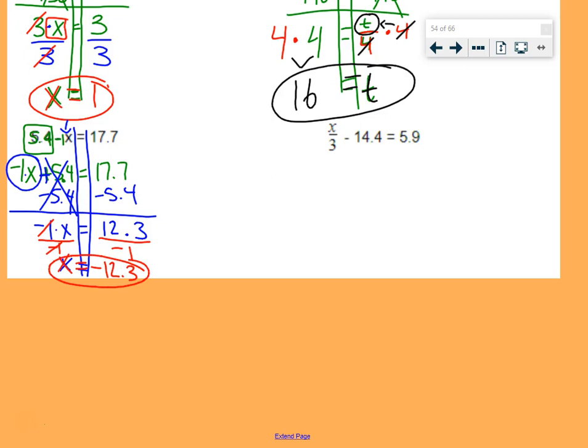All right, last example. Here's your railroad tracks. Here's your variable. That's your goal, get x by itself. I want you right now to try on your own getting x by itself. Once you've accomplished that, show me, and then you can move on to the next activity for today.